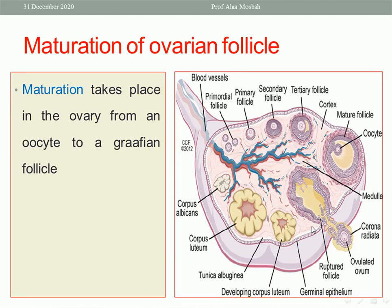The maturation starts from the primordial follicle. Females of childbearing age have 300,000 to 400,000 primordial follicles. Each cycle, a few follicles in each ovary try to enlarge and mature. These primary follicles pass through many stages — primary, secondary, and tertiary follicle in the cortex — to reach the mature Graafian follicle, progressing through pre-antral, antral, and mature Graafian stages.